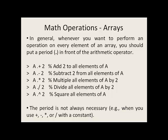So if you want to add 2 to every element in A, no matter whatever size A is, you would say dot plus. To subtract 2, you'd say dot minus, dot asterisk for multiply, dot front slash for divide, dot up arrow for square.